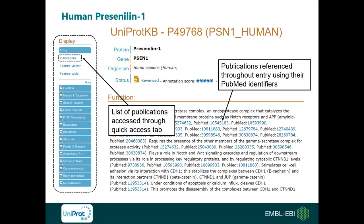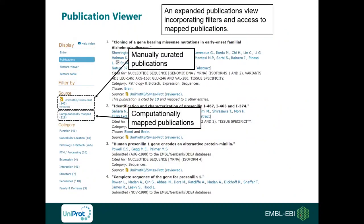To identify the source of information, every comment is tagged with an evidence tag — either an experimental tag referring to the PubMed ID where the information is from, or a similarity tag when the information was propagated from an orthologous protein from another species. You can also access a full list of publications associated with the protein of interest using the access tab on the left to go to the publication viewer. In the publication viewer, you can find manually curated publications reviewed by one of our curators, tagged with a gold standard tag. You can also find computationally mapped publications that mention the protein, which have not been reviewed by one of our curators.